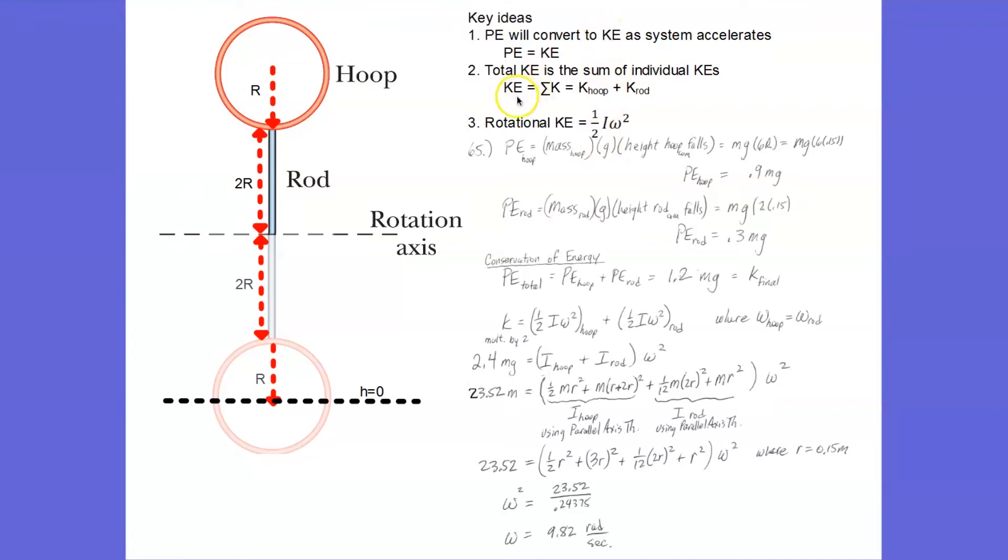Then the kinetic energy of the system is the sum of the kinetic energies of all the objects that make up the system. So we're going to break it down into two pieces, the hoop and the rod.